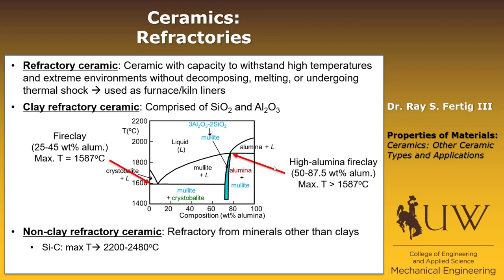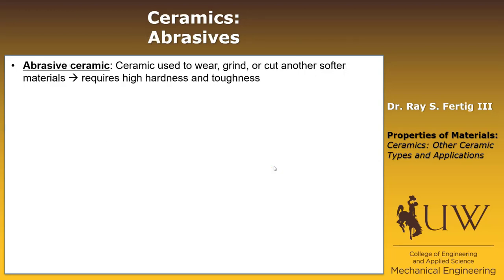So think of refractories as ceramics you put in high-temperature, possibly corrosive environments where stability is required. Another class of ceramics is abrasive ceramics — just like it sounds. These are ceramics used to wear, grind, or cut softer materials, like diamond particles embedded in a blade for cutting tile or metal. This requires high hardness and toughness so the abrasive damages the workpiece, not the wheel or grinder itself.